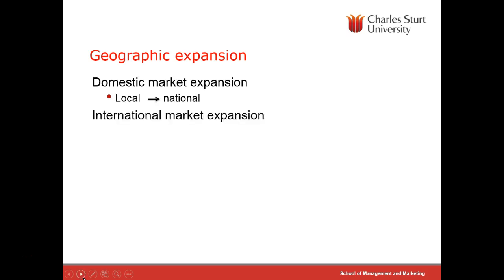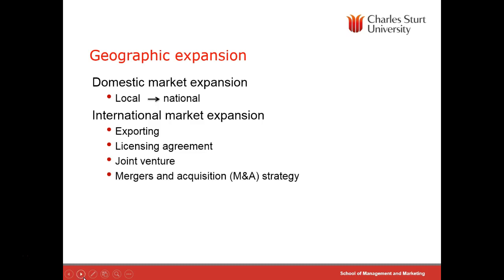International market expansion is a little bit more tricky, moving from exporting through to licensing agreements. We may set up joint ventures, or pursue a mergers and acquisitions strategy — what's often called inorganic growth — or we may set up wholly owned subsidiaries. Out of all these, licensing and exports are the most common for Australian manufacturers, exporters, and service exporters.